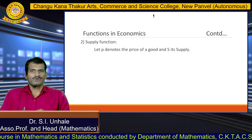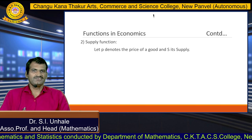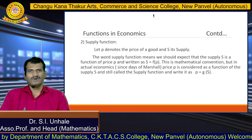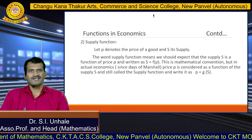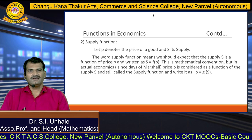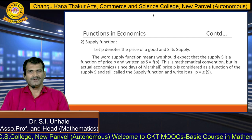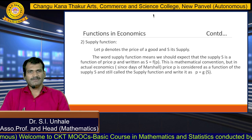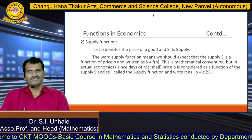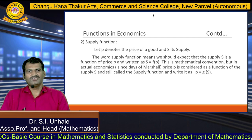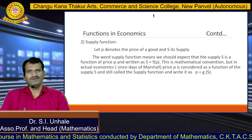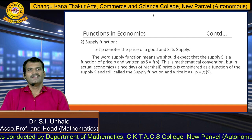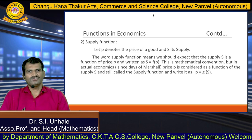The second function from economics is the supply function. If p is the price of goods and s is the supply in the market, then we define the supply function. The word supply function means we should expect that supply s is a function of price p, written as s equals f of p, where s is the supply and p is the price. But in actual economics, since the days of Marshall, price p is considered as a function of supply s and is still called the supply function, written as p equals g of s, where p is the price and s is the supply.